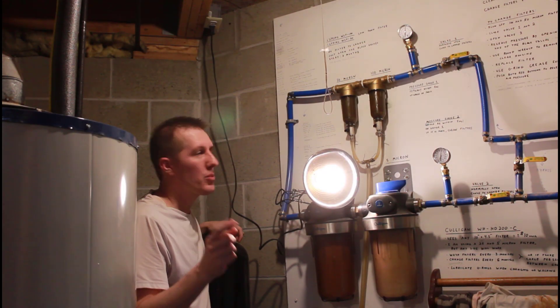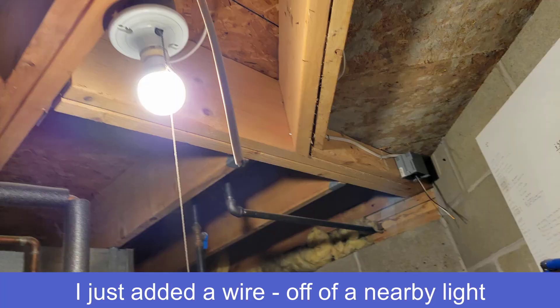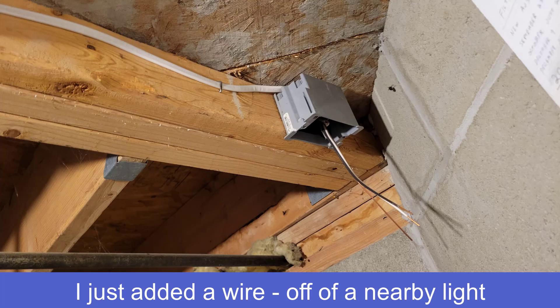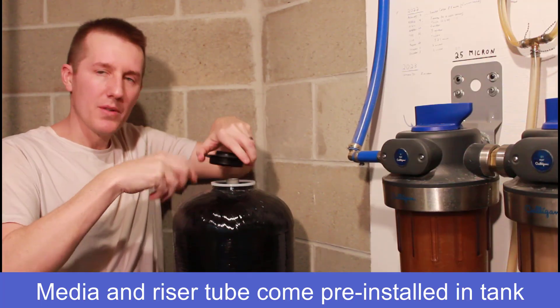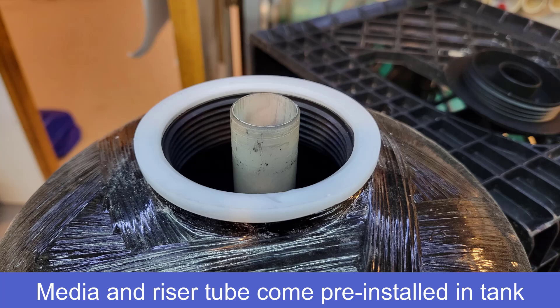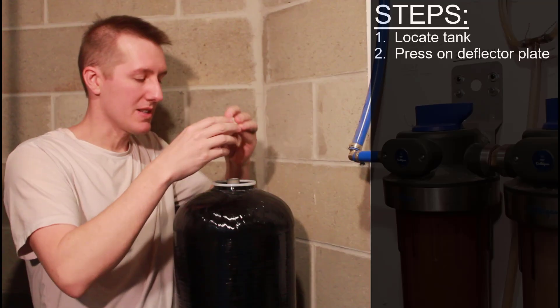One thing I did beforehand was install this outlet. You're going to need to plug this in somewhere. Step one, after you have the tank located where you want it to go, the media and riser tube are already installed in here, so you remove that cap, and then you put this deflector plate in.